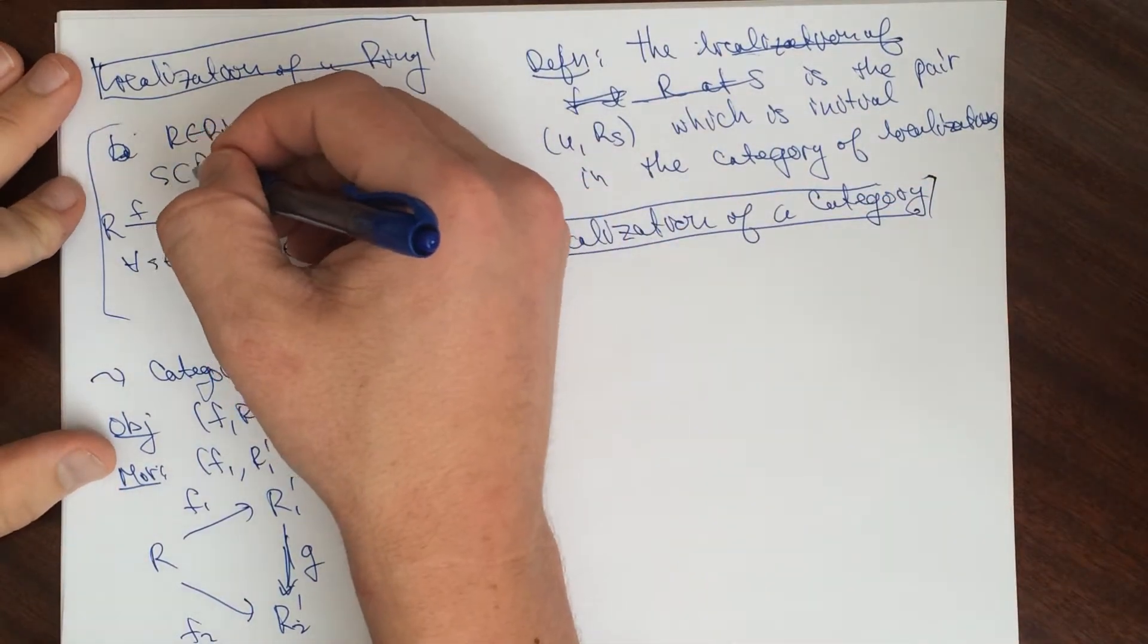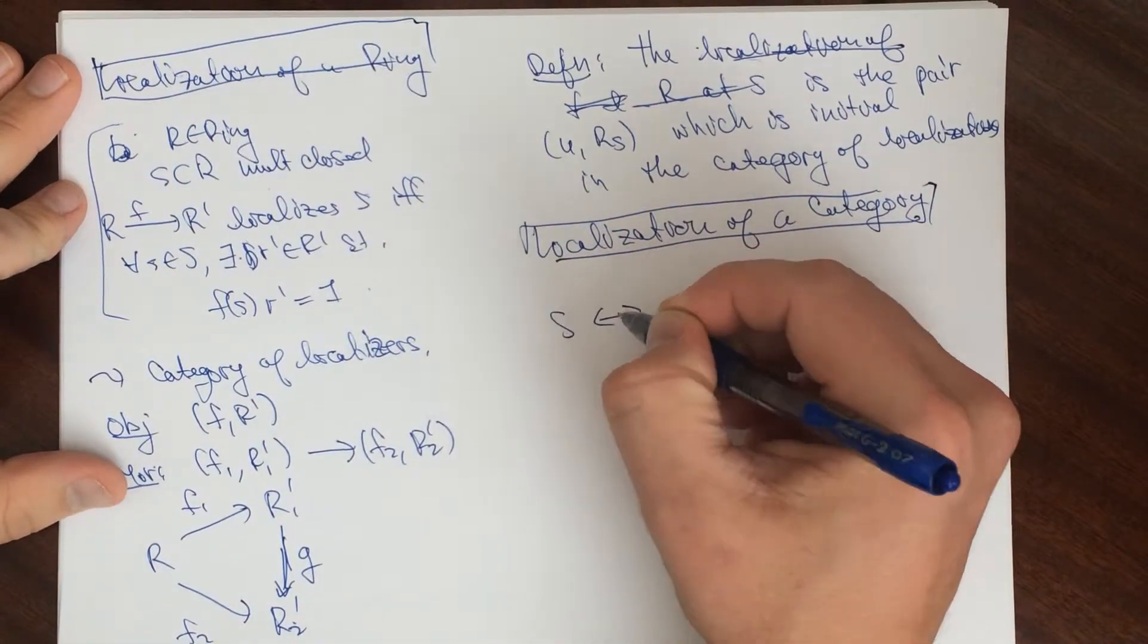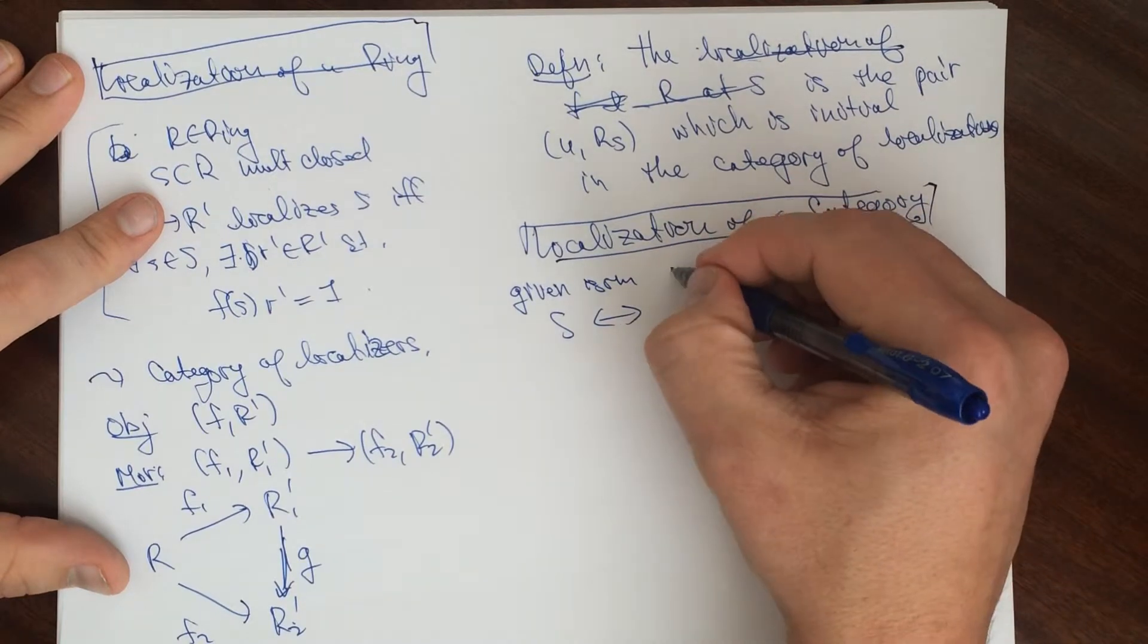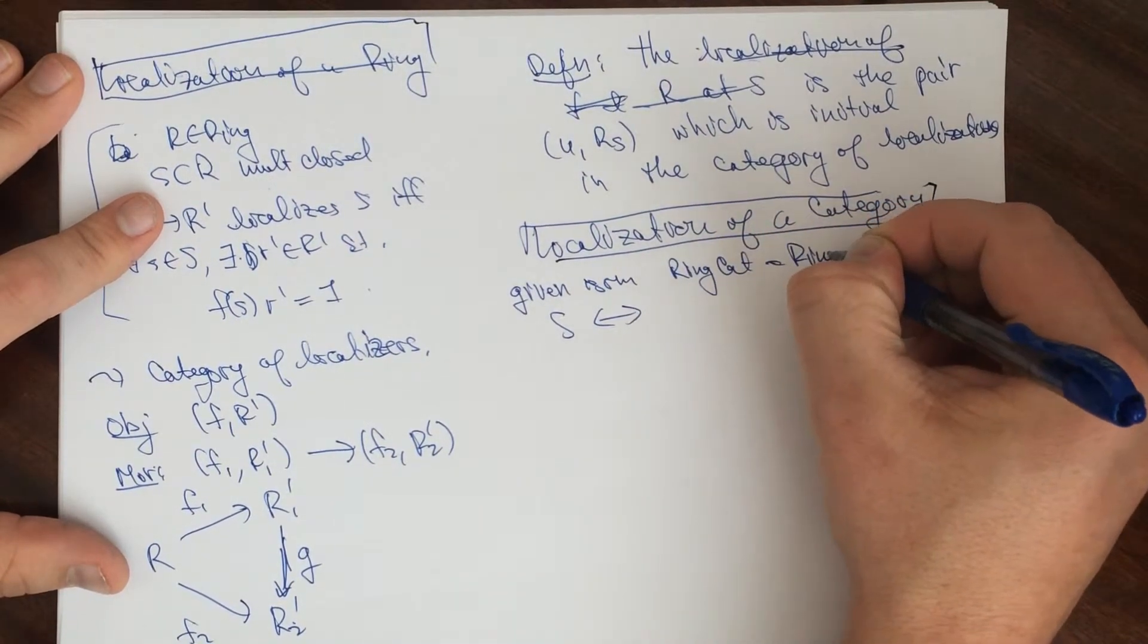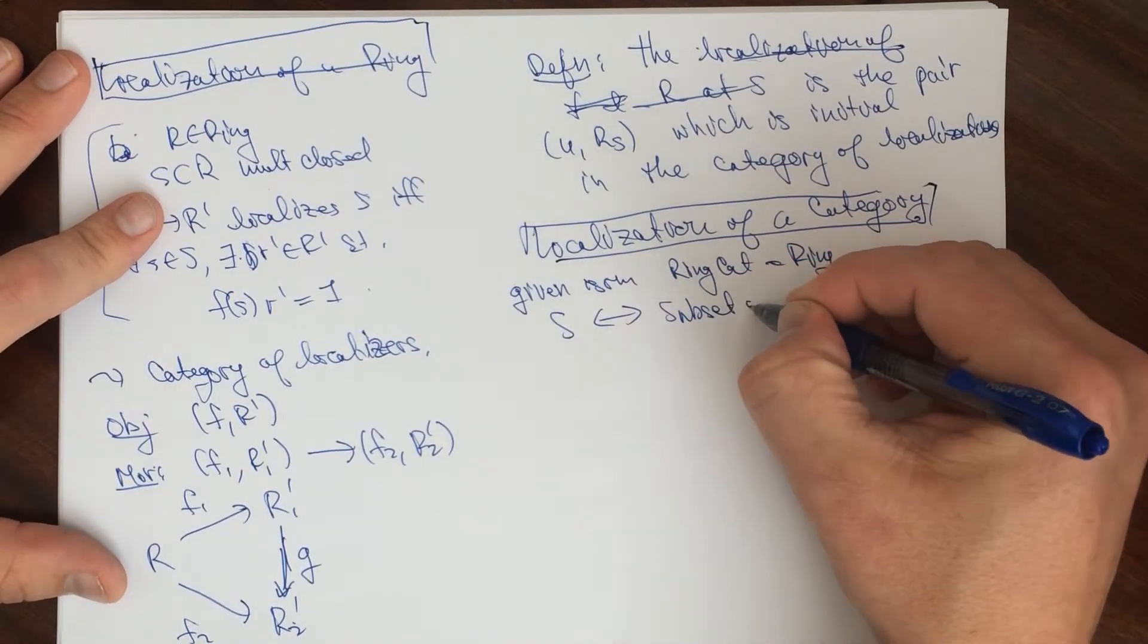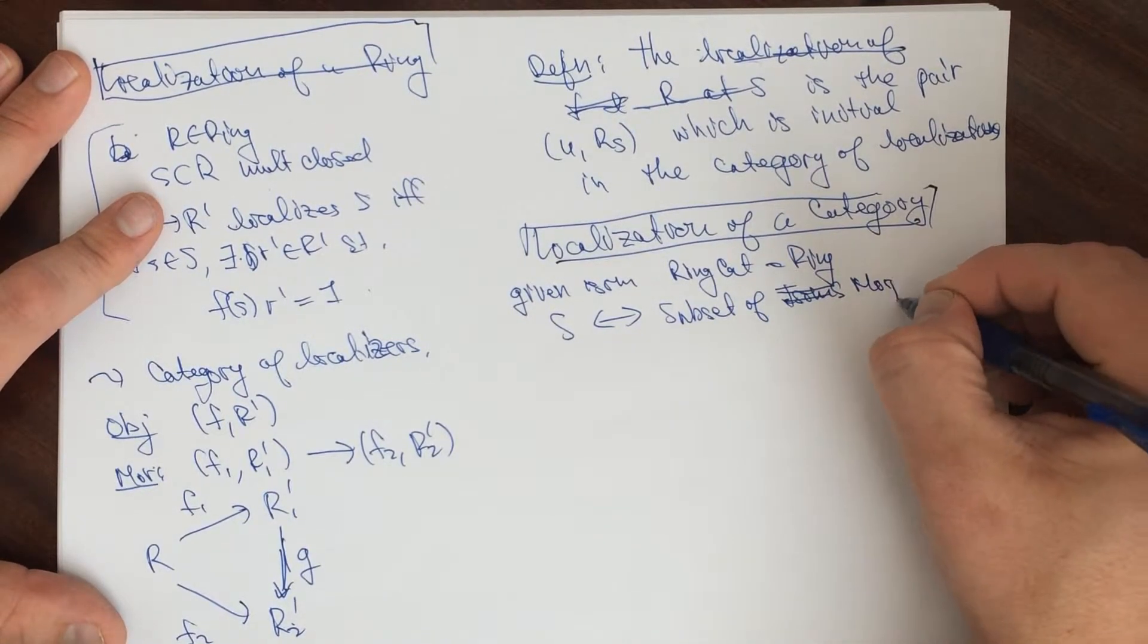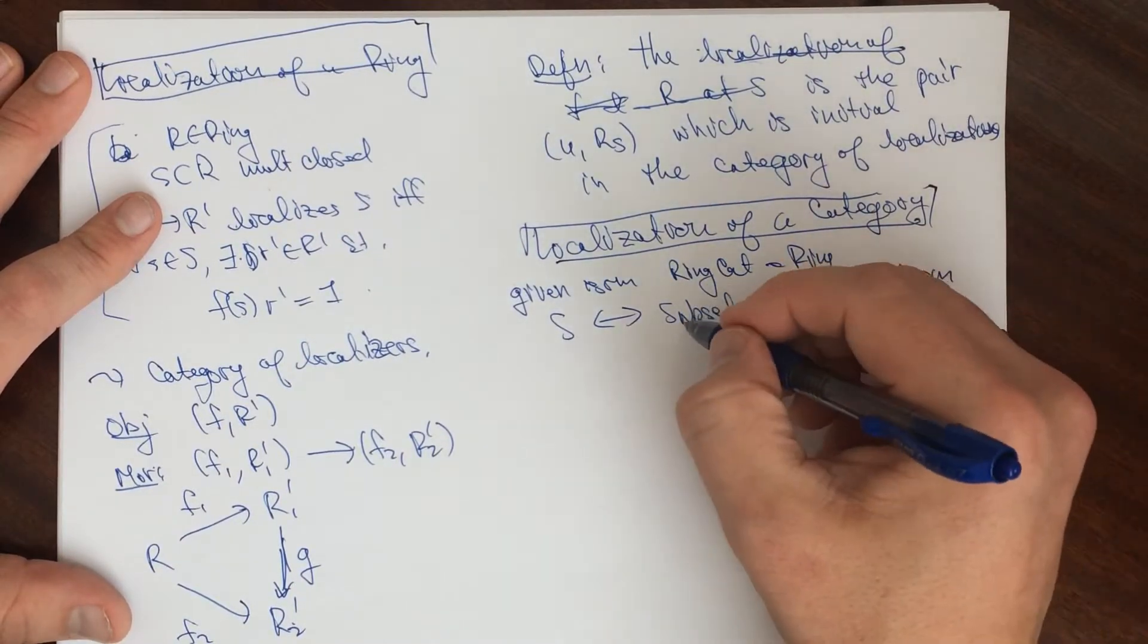To localize a category, we're going to do something similar. So this set S now in our previous description, given the isomorphism of ring cat with the category of rings, S corresponds to a certain subset of isomorphisms, or sorry, subset of morphisms or collection of morphisms.